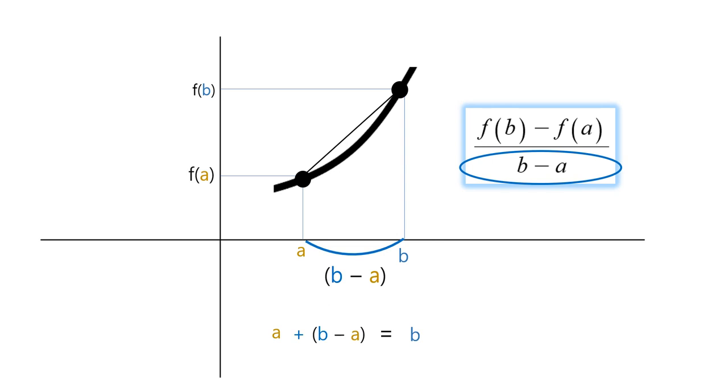And the numerator means the amount of change in direction of y-axis like this. What is f(b) minus f(a)? Well, f(a) plus f(b) minus f(a) is f(b), which means final value of y, which is f(b).